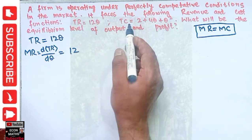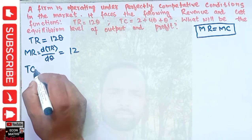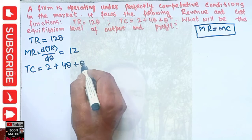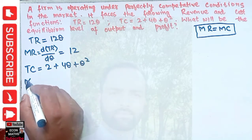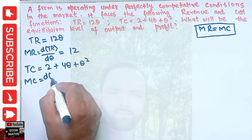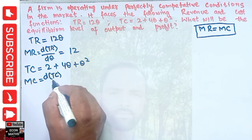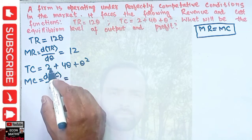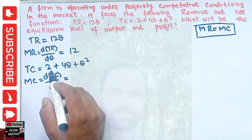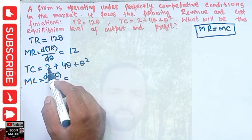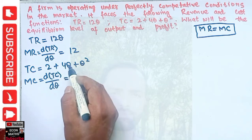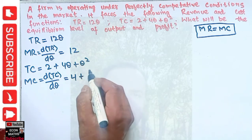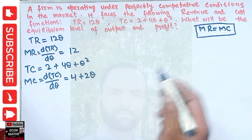We are also given the total cost function: 2 plus 4Q plus Q squared. Marginal cost is the derivative of total cost with respect to Q. The derivative of the constant 2 is 0, the derivative of 4Q is 4, and the derivative of Q squared is 2Q. So marginal cost equals 4 plus 2Q.